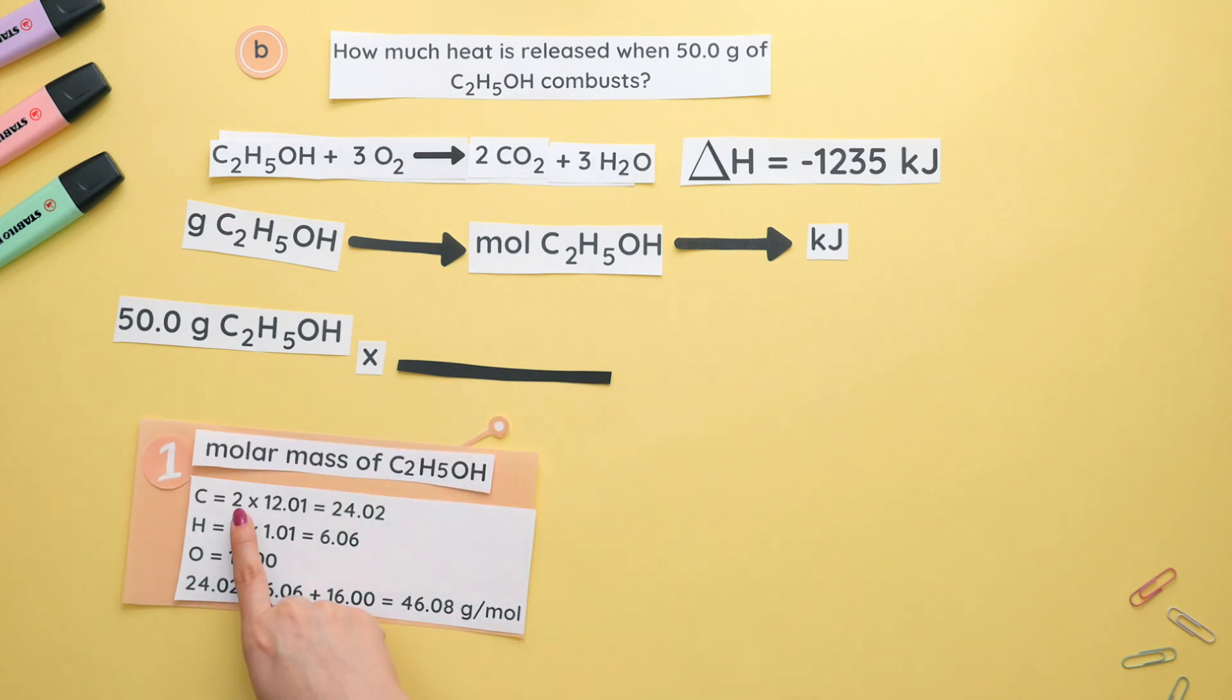There's two carbons. Multiply two by the mass of carbon, so we get 24.02. Now for hydrogen, we have six, multiply that by the mass of hydrogen and we get 6.06 and there's only one oxygen. So our mass is 16. Add all of these up to get the molar mass of ethanol, which is 46.08 grams per mole.